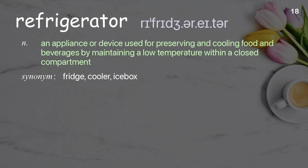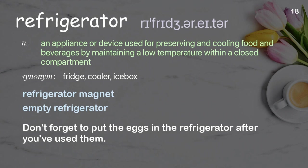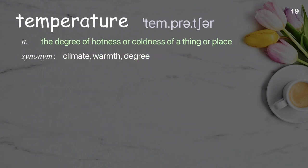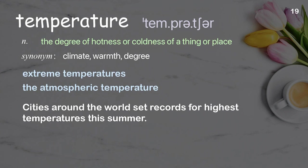Refrigerator: an appliance or device used for preserving and cooling food and beverages by maintaining a low temperature within a closed compartment. Examples: refrigerator magnet, empty refrigerator. Don't forget to put the eggs in the refrigerator after you've used them. Temperature: the degree of hotness or coldness of a thing or place. Examples: extreme temperatures, the atmospheric temperature. Cities around the world set records for highest temperatures this summer.